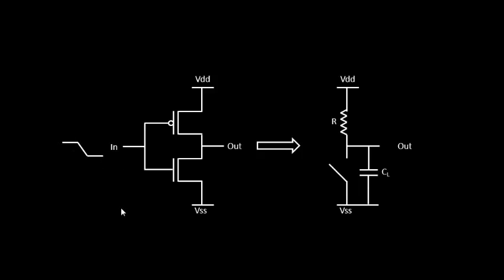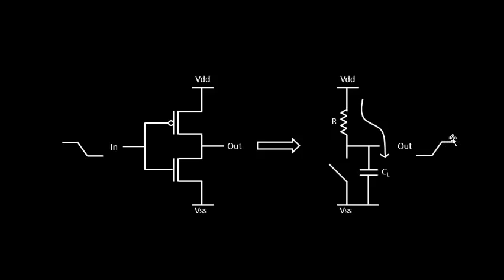Looking at the propagation delay of an inverter: when the input is at logic zero, the PMOS is ON and NMOS is OFF. The PMOS can be replaced by a resistor and the NMOS by an open switch. The output shows a charging capacitance, with current flowing through the resistor into the capacitance.